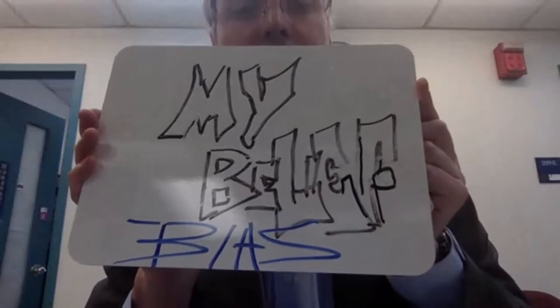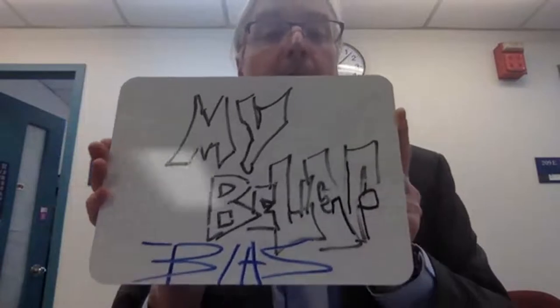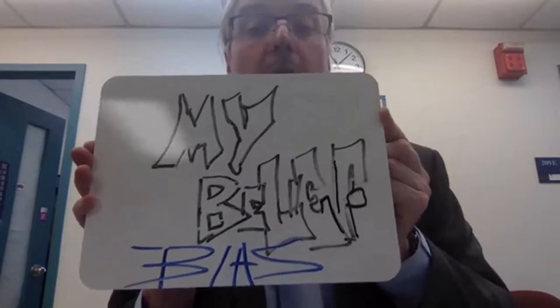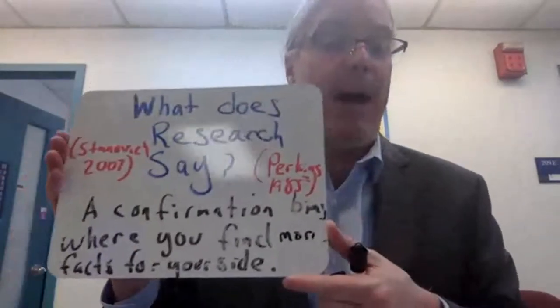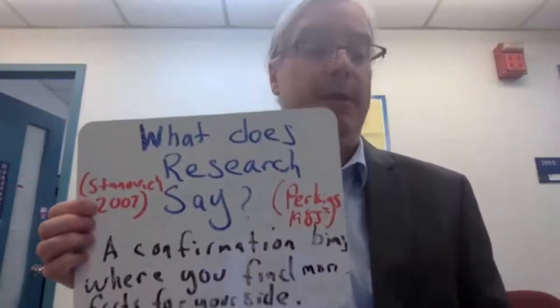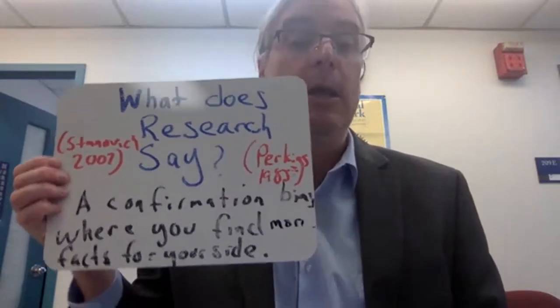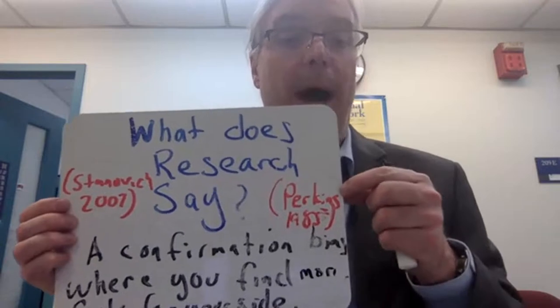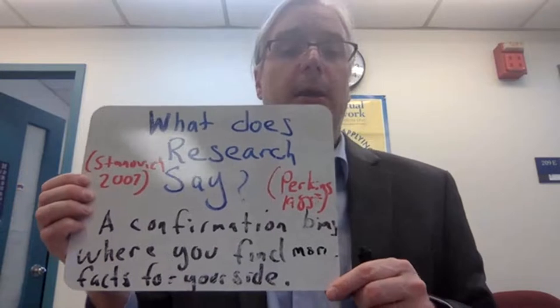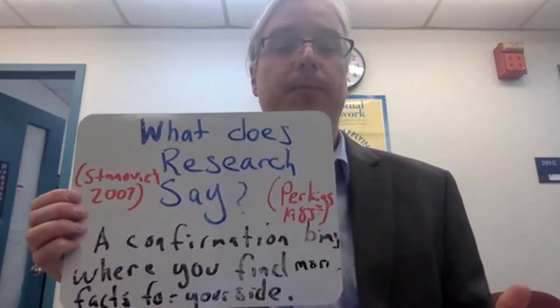When it comes to argumentative writing, what happens is my-side bias comes into play. When we have our students do argument writing, we rely too heavily on the my-side bias, and our reading comprehension and writing skills are impacted by that belief bias. What does research say? Well, it's a kind of confirmation bias. When we give students a topic to research and write about for argumentative writing, they can always find more arguments that support their position. The term 'my-side bias' comes from Perkins in 1985, and you can also read Stanovich, 2007.